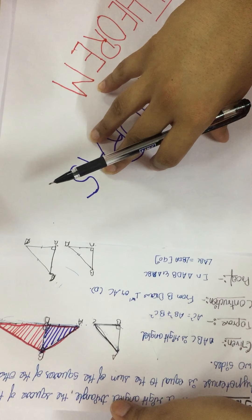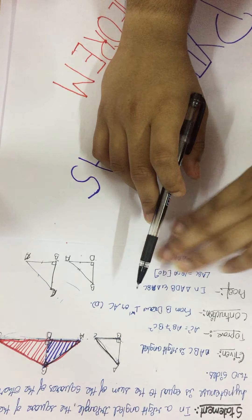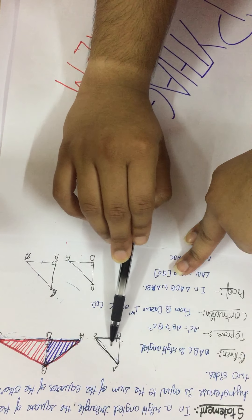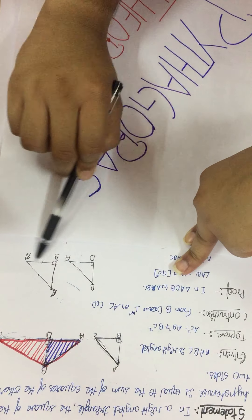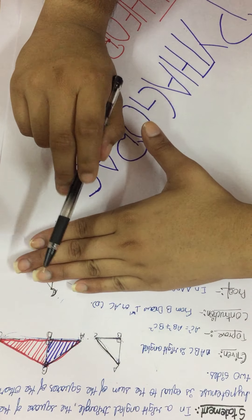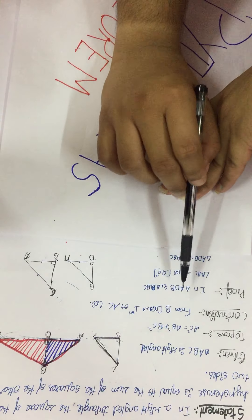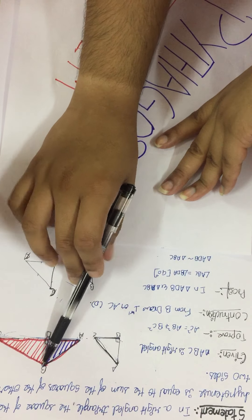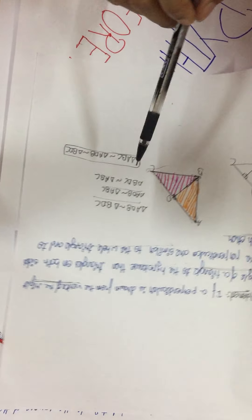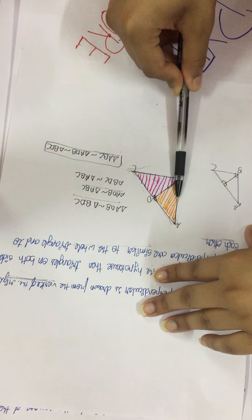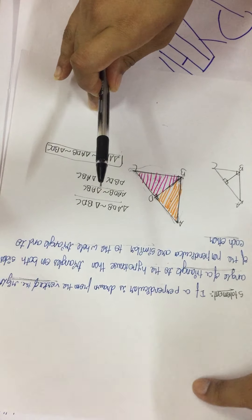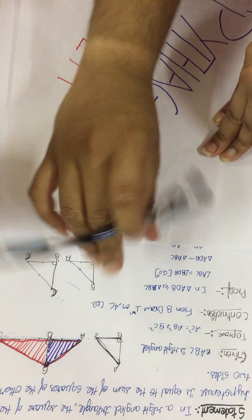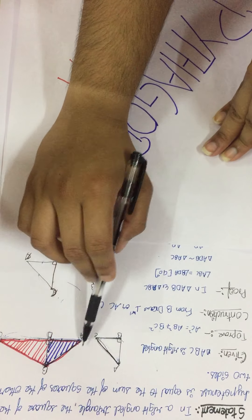In triangle ADB and triangle ABC — from the theorem we just learnt, this purple triangle is similar to the full big triangle. So triangle ADB is similar to triangle ABC. Now, since two triangles are similar to each other, their corresponding sides are in the same ratio.